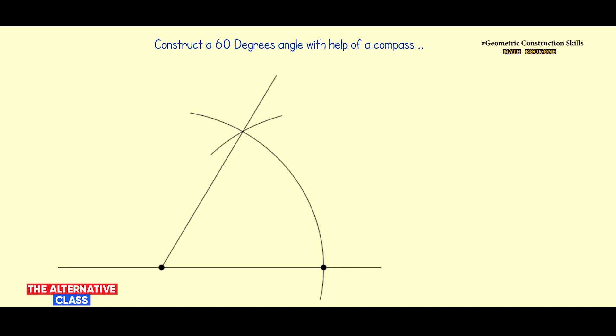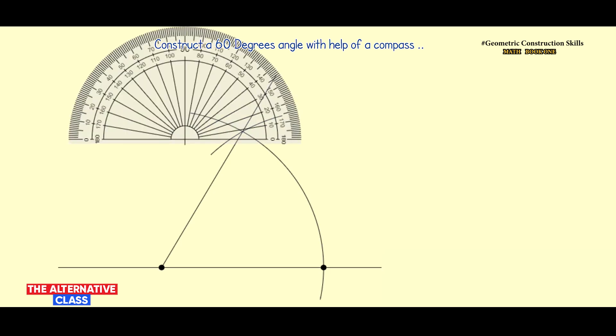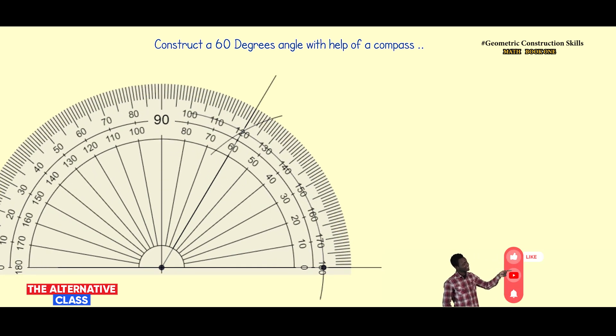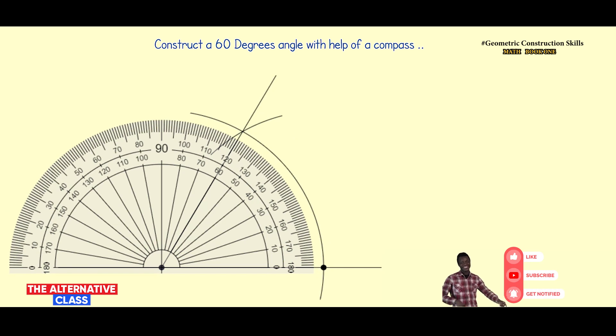We draw a straight line joining to our previous point on the line. When I bring my protractor and measure this angle, it's 60 degrees. You can see 60 degrees. This is how you can draw a 60-degree angle.